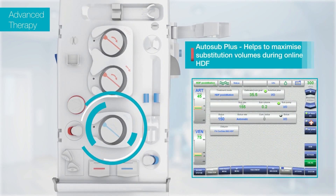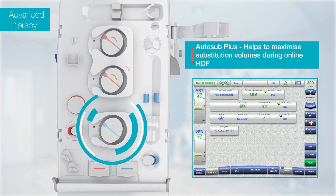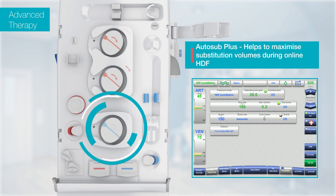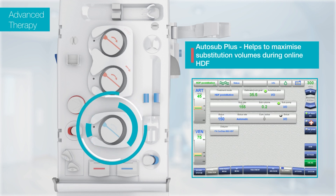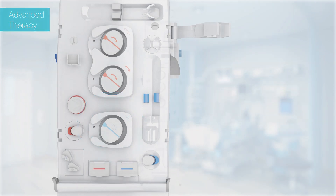The auto-sub-plus maximizes substitution volumes during online hemodiafiltration for high convective removal of middle molecules while avoiding haemoconcentration and filter clotting. This is achieved by continuous signal analysis of pressure pulses generated by the blood pump.